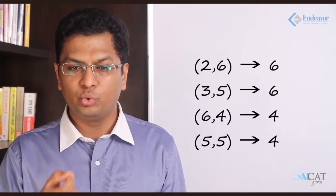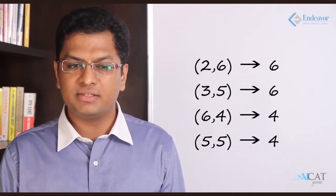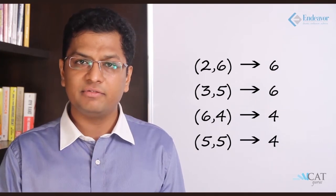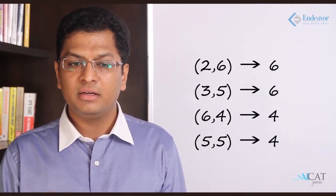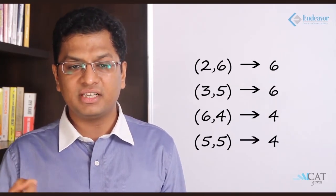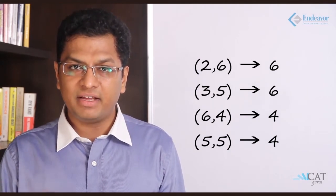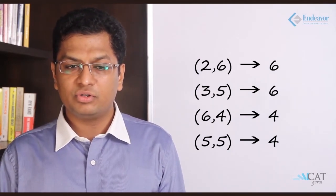Suppose two sides equal 7 — say 2 plus 5 with the third being 7. Then 2 and 5 together form a straight line equal to the third side, so this will not form a triangle. Hence any two sides must total more than 7. The possible combinations are: 2 and 6 (third side 6), 3 and 5 (third side 6), 6 and 4 (third side 4), and 5 and 5 (third side 4). So there are 4 total possible combinations.